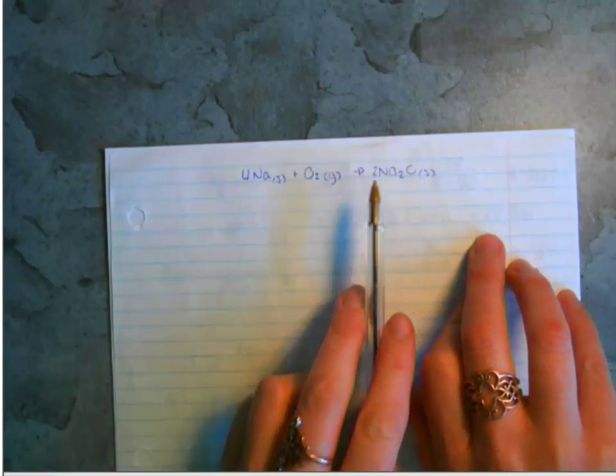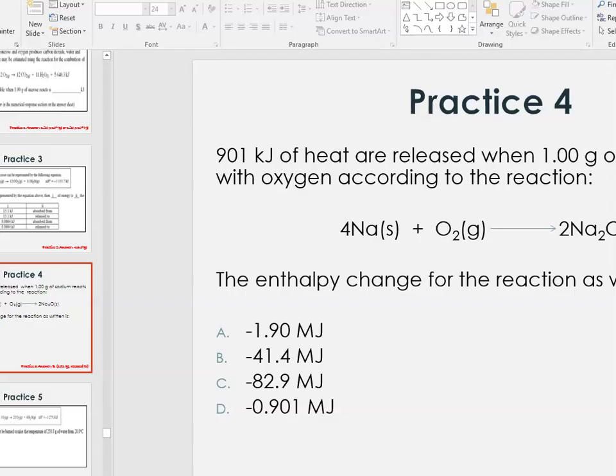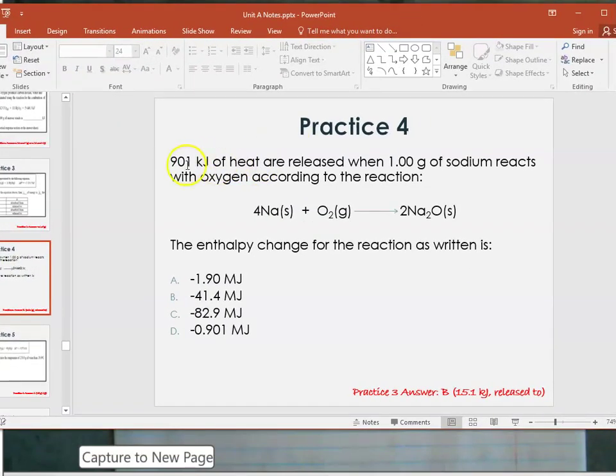901 kilojoules, so here's the question. 901 kilojoules of heat are released when one gram of sodium reacts according to this reaction. So I noticed that when you did the question...